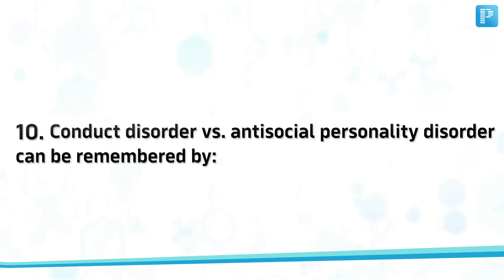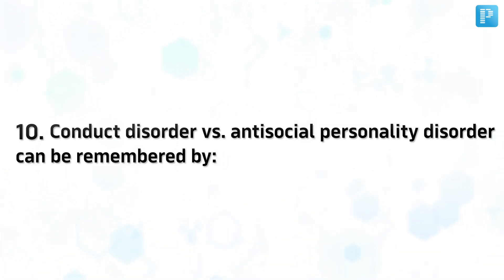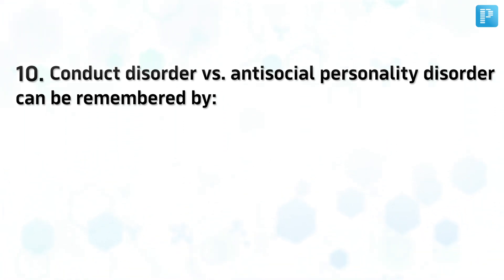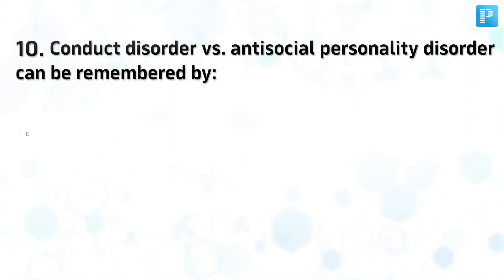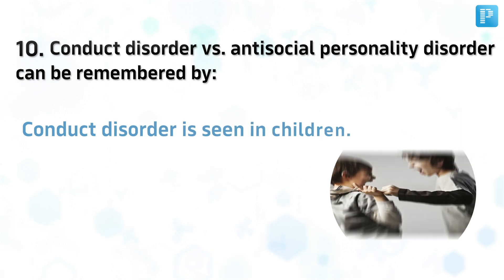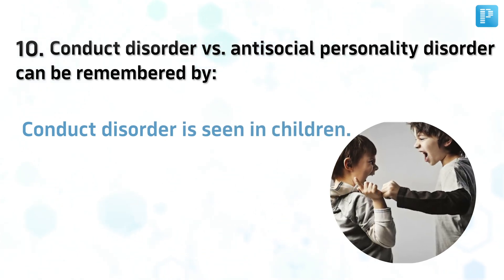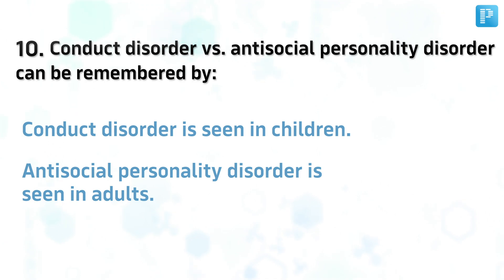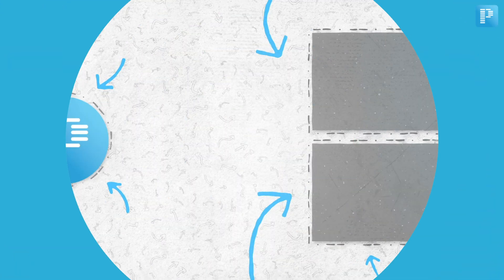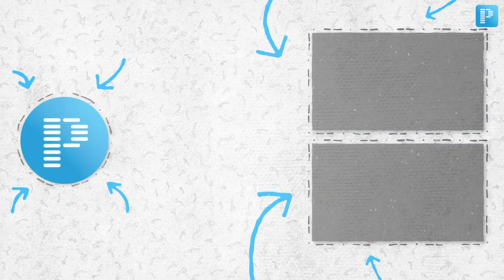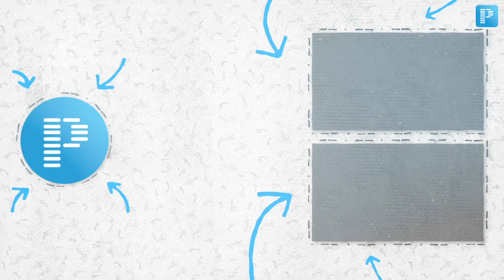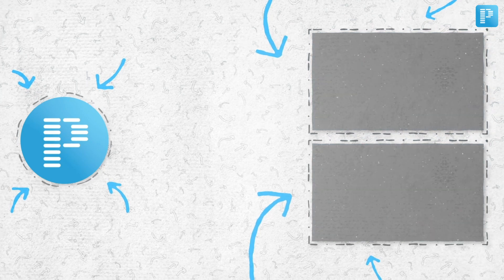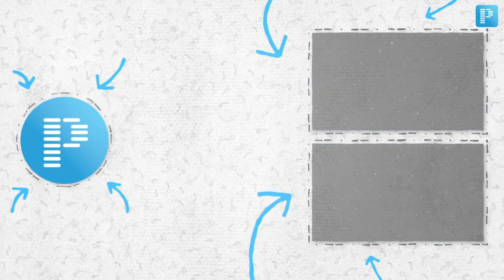Number 10. Conduct disorder vs. antisocial personality disorder can be remembered by: conduct disorder is seen in children, antisocial personality disorder is seen in adults — so it makes sense.